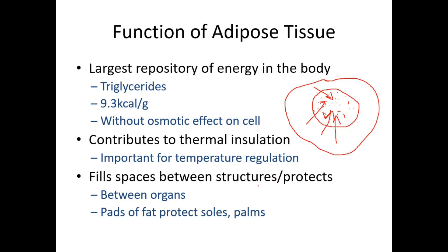For example, between muscle cells the space is usually filled by adipose tissue. In some places in our body especially those subjected to repeated mechanical stress, for example the soles and palms, the fat tissue accumulated there forms a pad. This pad functions as a cushion and shock absorber, protecting our body from repeated mechanical stress.